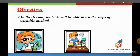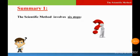A scientific method is a set of procedures that scientists follow in order to gain knowledge about the world. The scientific method involves six steps. So, the scientific method involves six steps. Now we will introduce the six steps of our scientific method.